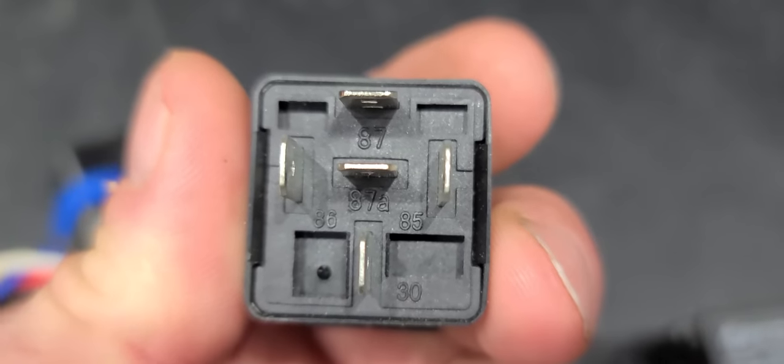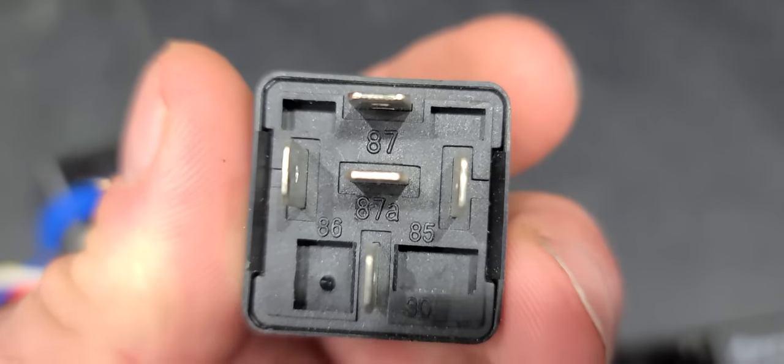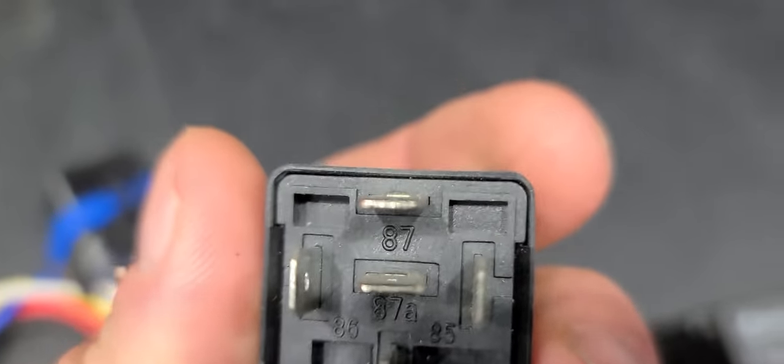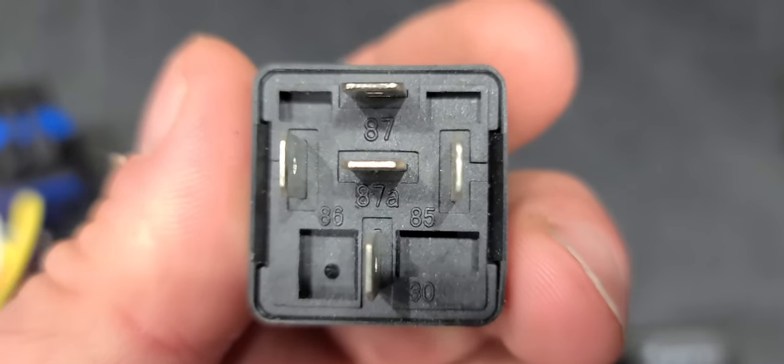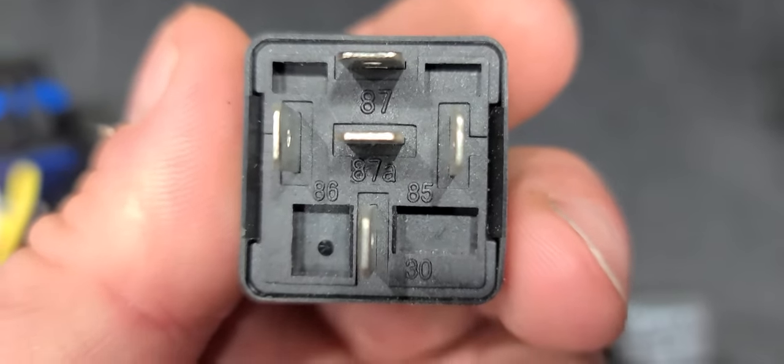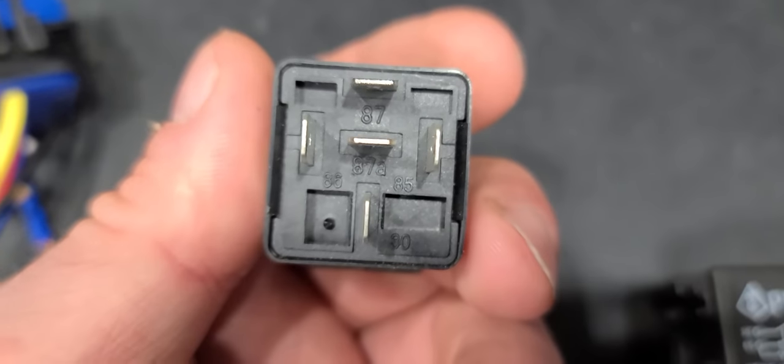You can see the pins are numbered - 86 and 85 both get power and ground each for the coil, small gauge wire 20-22 gauge. This is what you'll send out of your ECU, either a power or ground signal.